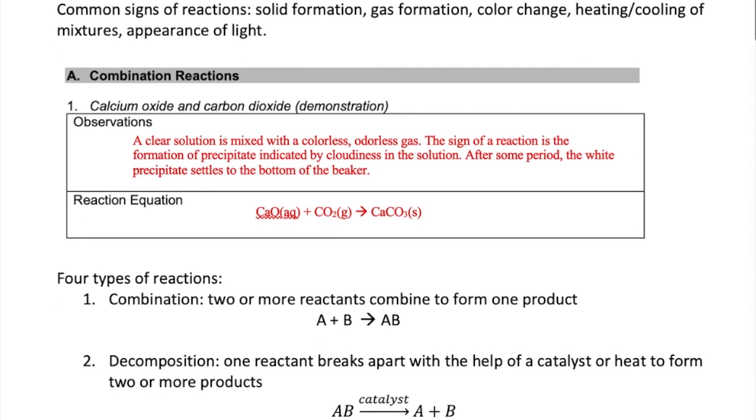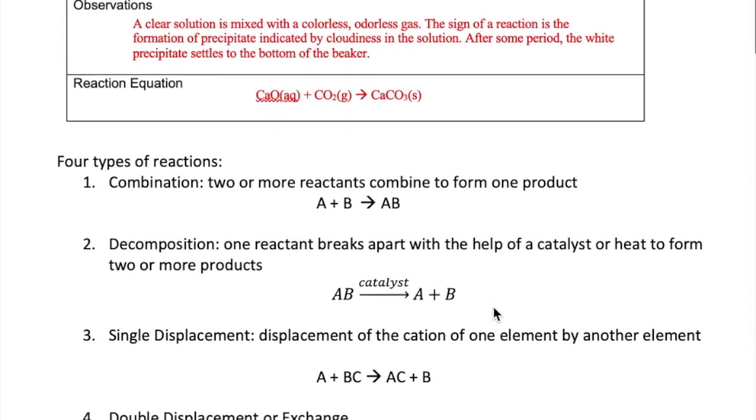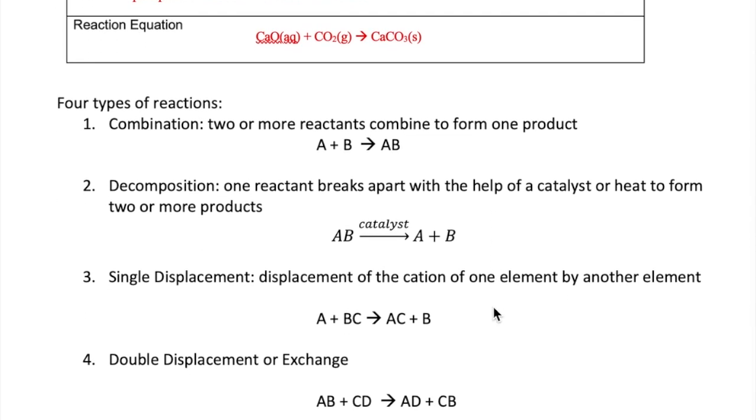Since the reaction is an example of a combination reaction, we know that the two reactants must combine to form one product, so we predict the formula of the product to be calcium carbonate, CaCO3, as written here. Calcium carbonate is an insoluble salt, so it matches with the observation that a solid product is formed. We balance the equation and we write the specific states for each of the species. So that's how you will complete each of the entries in your lab report.